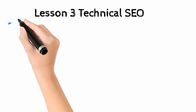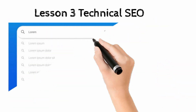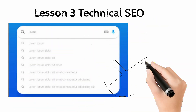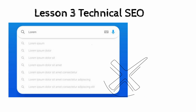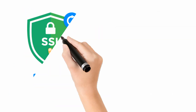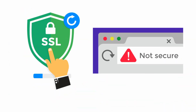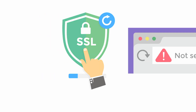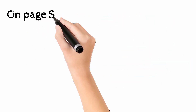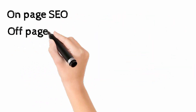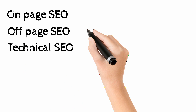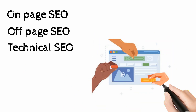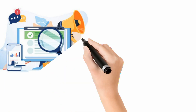Lesson 3: Technical SEO. Some people say they search for their website on Google but it doesn't appear, even though they installed SSL or their website isn't secure. SEO has 3 major types: On-page SEO, Off-page SEO, and Technical SEO. Technical SEO is about your website structure and how search engines see your website.